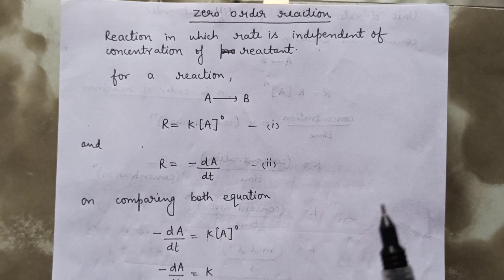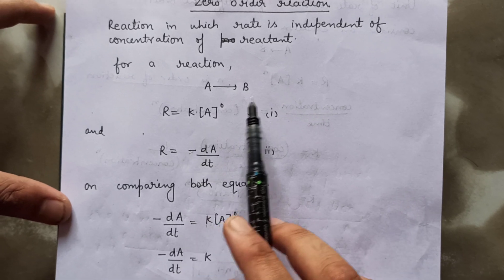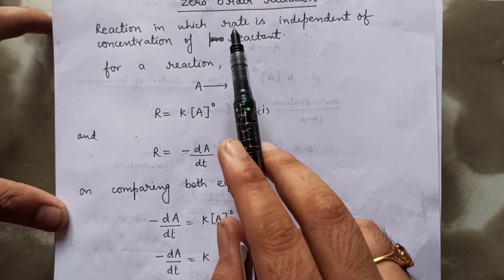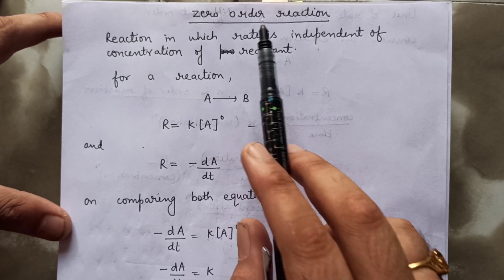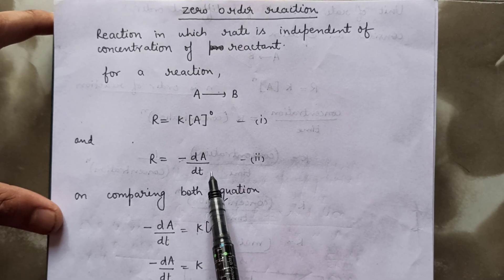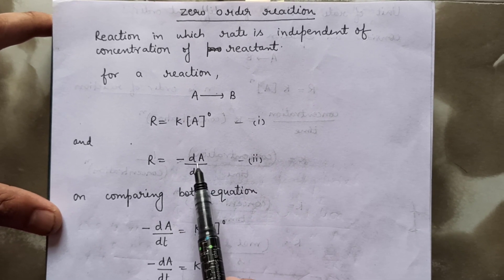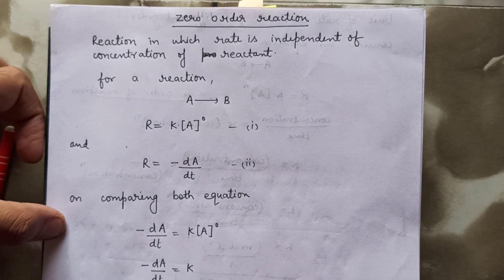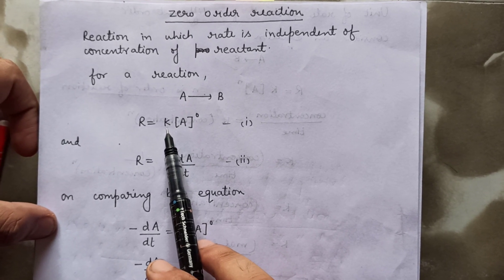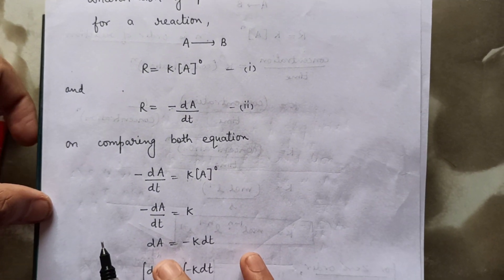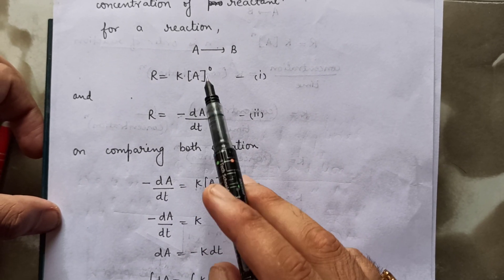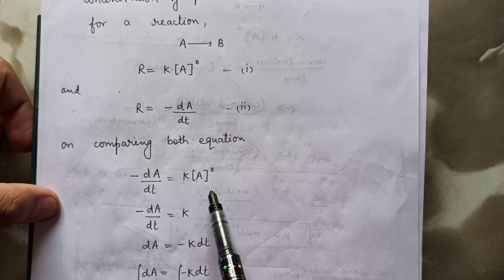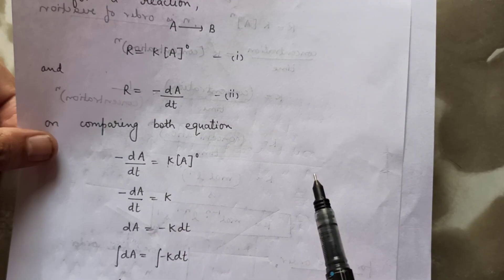Let us consider the equation A to B. So r equals k times a to the power zero — the zero is there because the reaction is zero-order. Now r also equals minus da by dt, according to the instantaneous rate. I am using both expressions to find an expression defining the rate constant for zero-order reaction. Comparing both equations gives us: minus da upon dt equals k times a to the power zero.